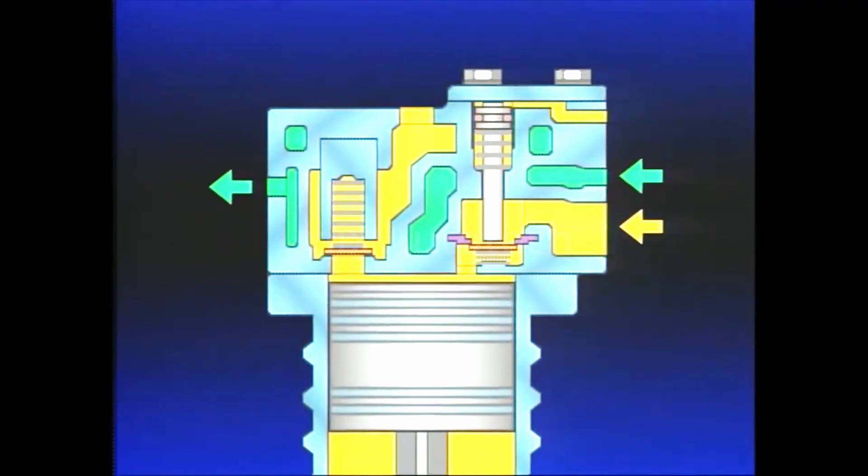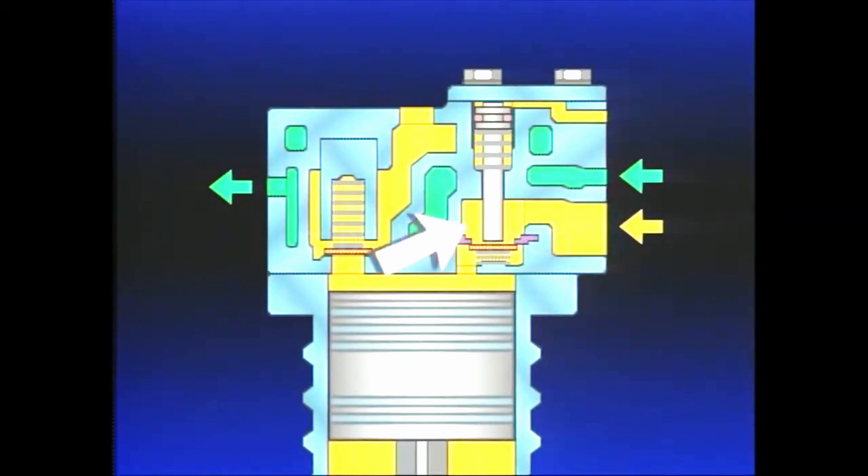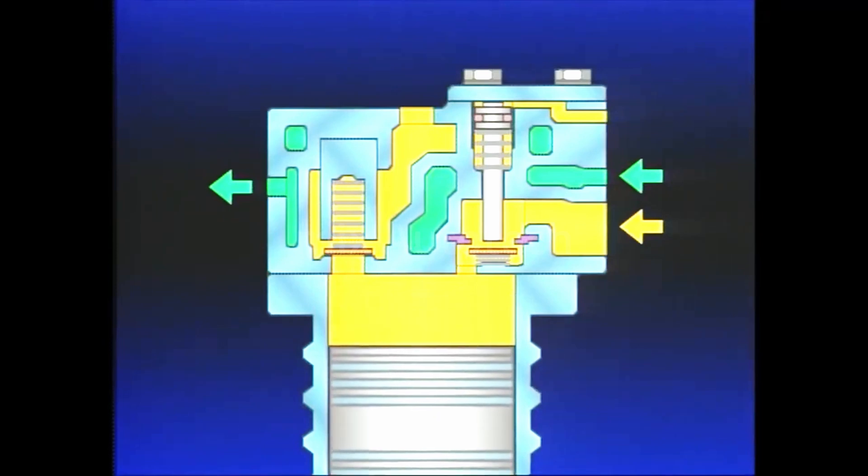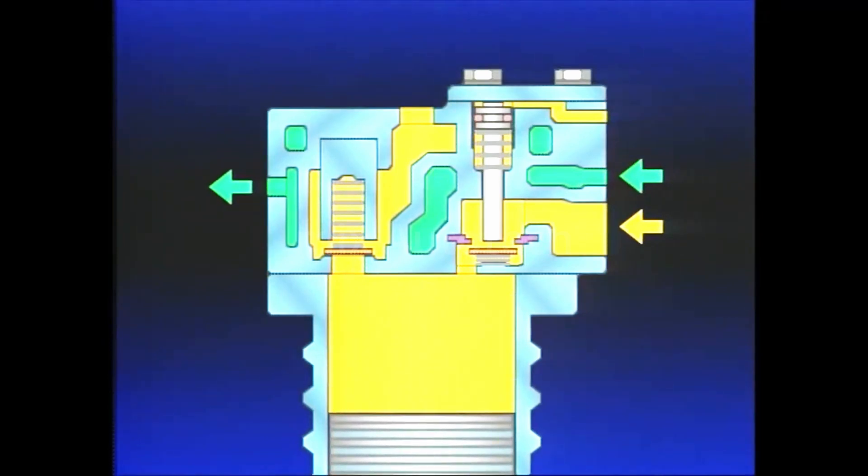During the intake stroke, a slight vacuum is created above the piston in the cylinder bore, causing the inlet valve to open and move from its seat. Filtered atmospheric air flows into the bore until the piston reaches bottom dead center and begins to reverse its travel.